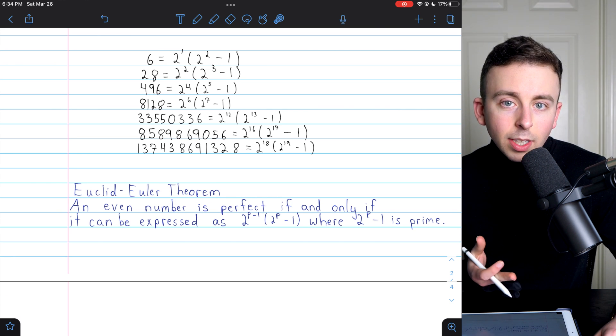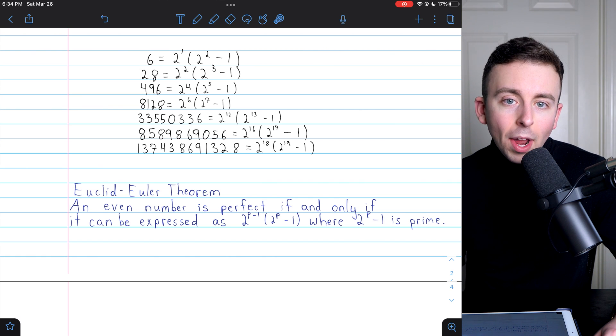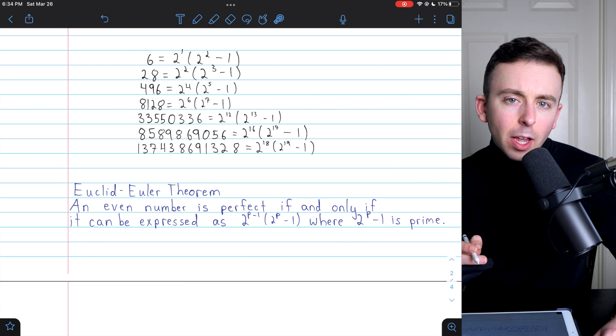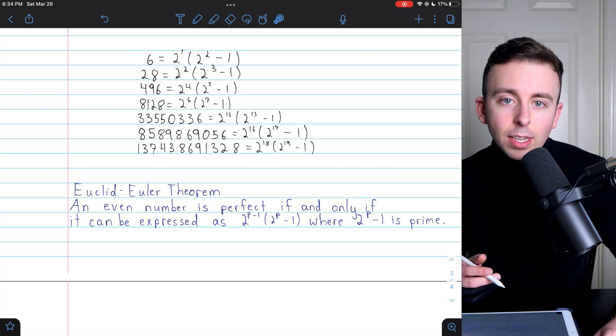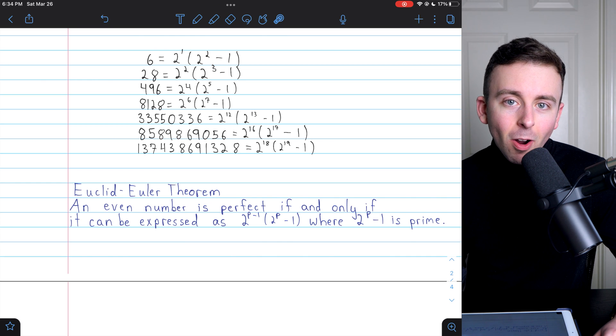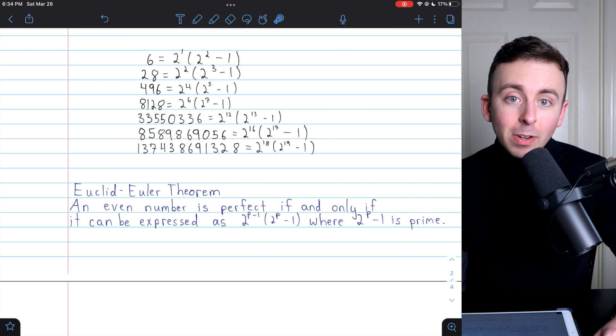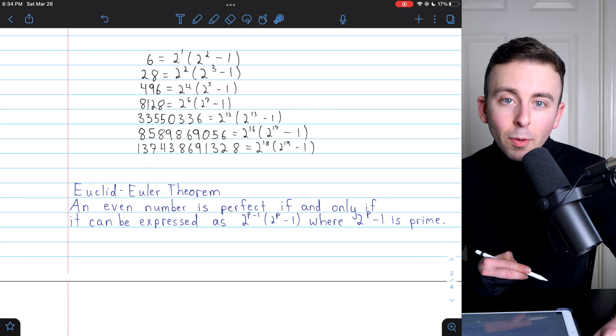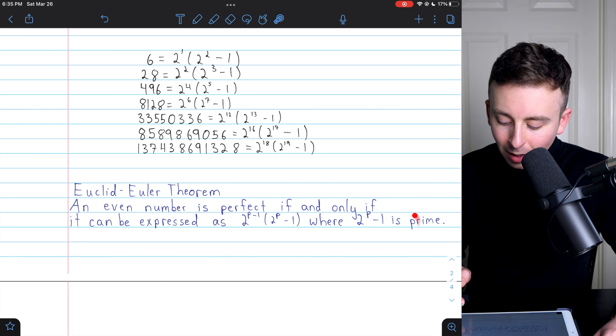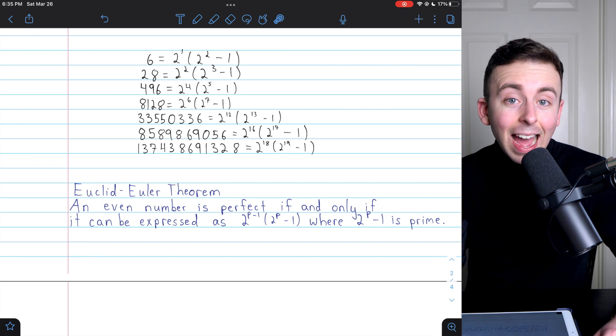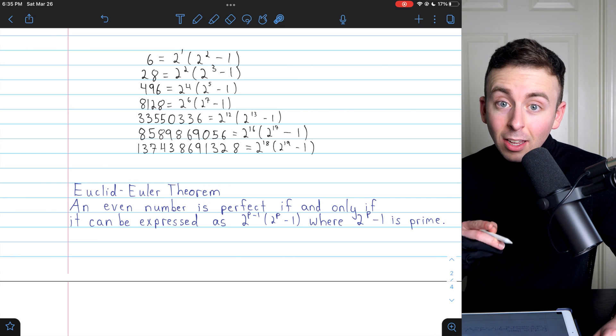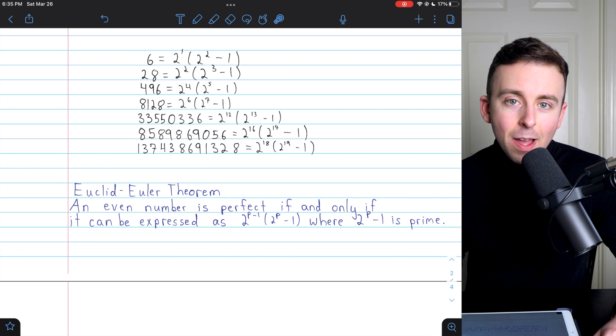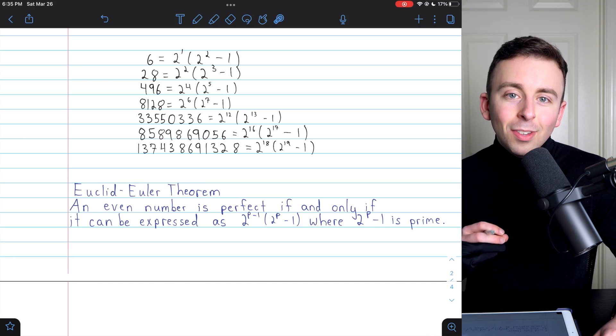Like I said, Euclid and Euler respectively each proved one half of this theorem, and we're going to go through a proof of it ourselves. But before we do that, we're going to want to see what Mersenne primes are. And in fact, we've already flirted with them a little bit. Mersenne primes are prime numbers like this guy here, 2 to the p minus 1. Remember in this theorem, 2 to the p minus 1 has to be prime. Such a prime number is called a Mersenne prime, and we'll talk more about those next time.